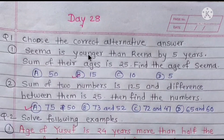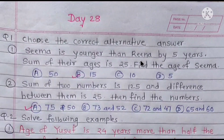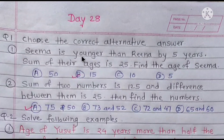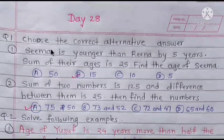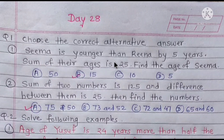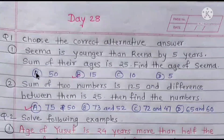Sima is younger. If Rina's age is X, then Sima is younger than Rina by 5 years, so Sima is X plus 5. Their ages are X and X plus 5. X plus X plus 5 is equal to 25. Solving the equation, the answer is option number 2: 15.